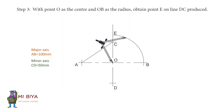In Step 3, with point O as the center and OB as the radius, obtain point E on line DC produced. You need to obtain a point E through O. Because you've got point B and point O, you stretch your compass up to point B, then draw the arc up to E. So we are done with this step.